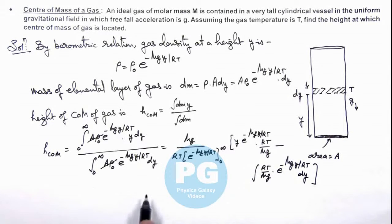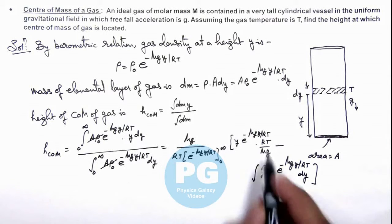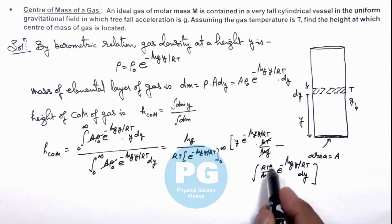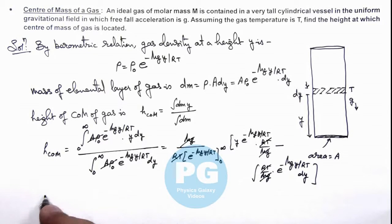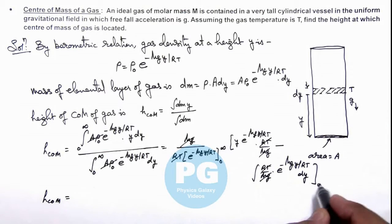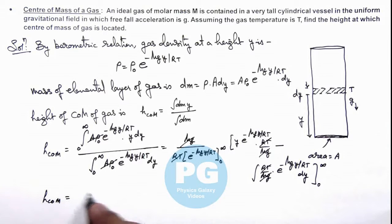On further simplifying these values here, RT/Mg can also be cancelled out. And further when you solve it, this gives height of center of mass is equal to... this numerical value on simplifying, just substitute the limits here from zero to infinity. When you substitute, this on simplifying will give you final result as RT/Mg, that will be the result of this problem.